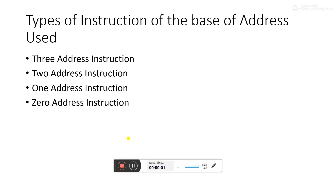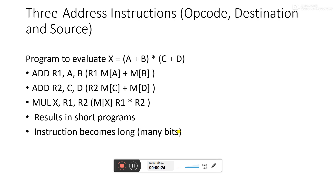Hello students. Today we are going to deal with the types of instructions based on address usage. We will cover four types: three address instructions, two address instructions, one address instructions, and zero address instructions. Let's see how they are interpreted in terms of instructions.